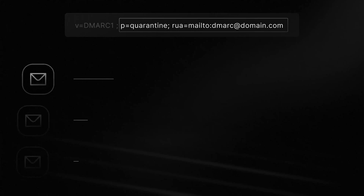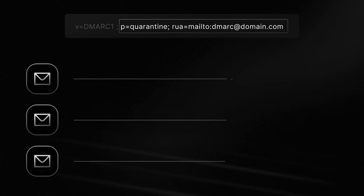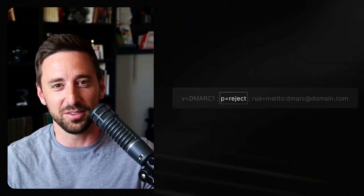Finally, enforce stricter policies. Set your policy to quarantine and continue monitoring. Quarantine often results in subtle deliverability issues — legitimate but broken senders may keep sending, unaware their mail is landing in spam. Once you're confident you've covered all your bases, you can change that policy to reject. Just continue monitoring to make sure you don't have any deliverability issues.